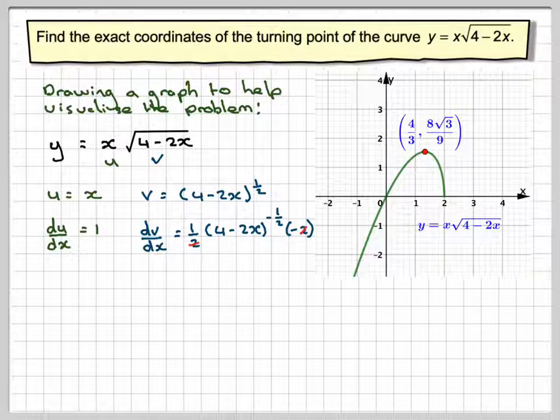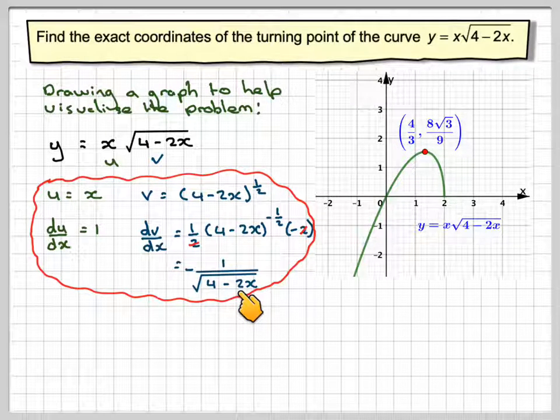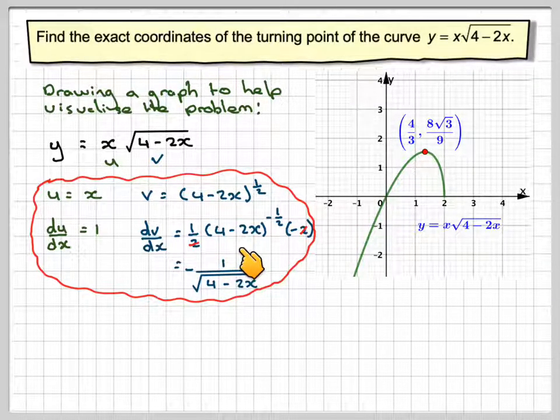The 2s are cancelled, but not the minus sign. Then that will become minus 1 over the square root of 4 minus 2x. Have a pause of video and make sure you can go from that step to that step.